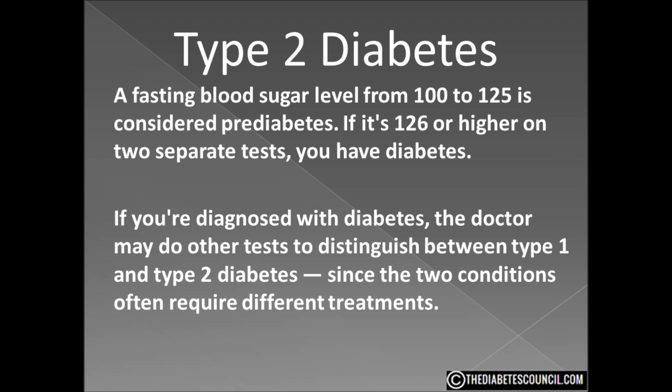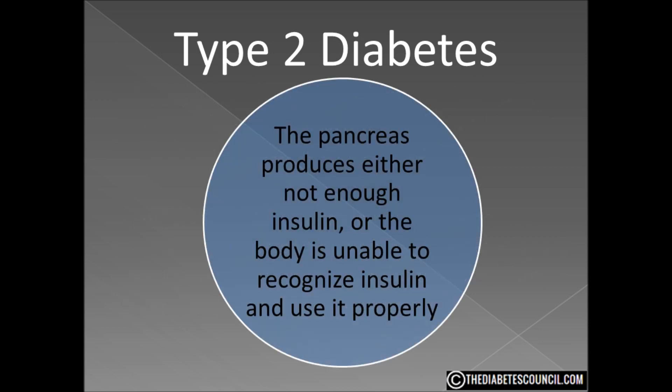If you're diagnosed with diabetes, the doctor may do other tests to distinguish between type 1 and type 2, since the two conditions often require different treatments. According to WebMD, with type 2 diabetes the body continues to produce insulin, although insulin production may significantly decrease over time. The pancreas produces not enough insulin, or the body is unable to recognize insulin and use it properly. When there isn't enough insulin or it isn't used properly, glucose can't get to the body's cells to be used as energy.